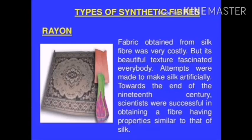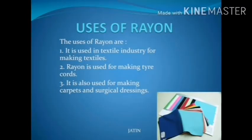Towards the end of the 19th century, scientists were successful in obtaining a fibre having properties similar to that of silk. Some uses of rayon: it is used in textile industries for making textiles, for making tire cords, carpets, surgical dressings, and bandages.